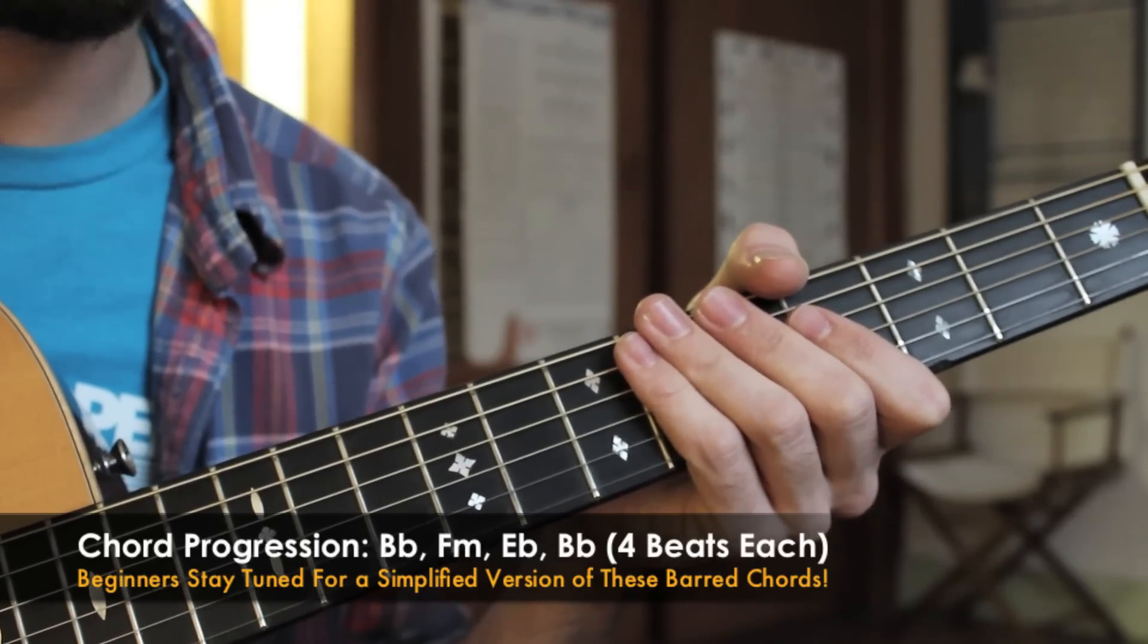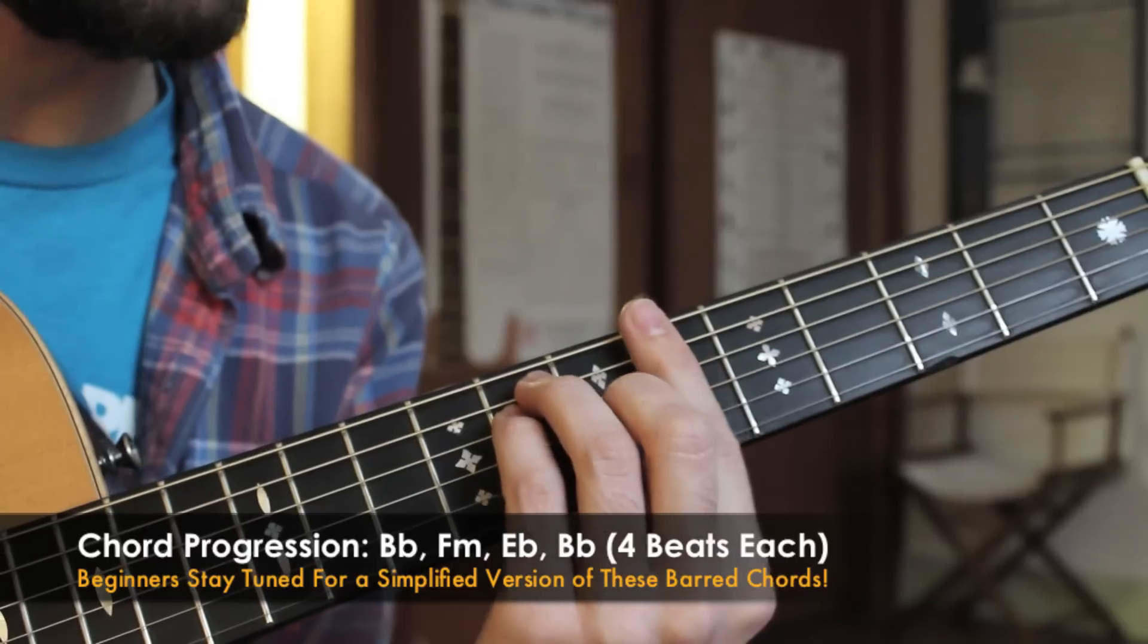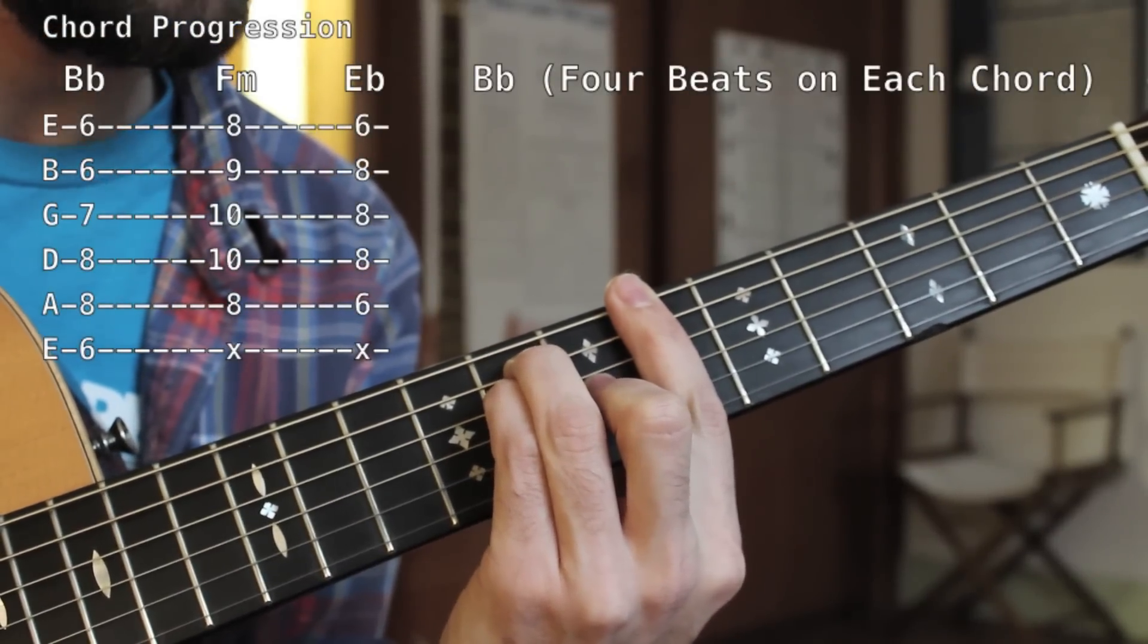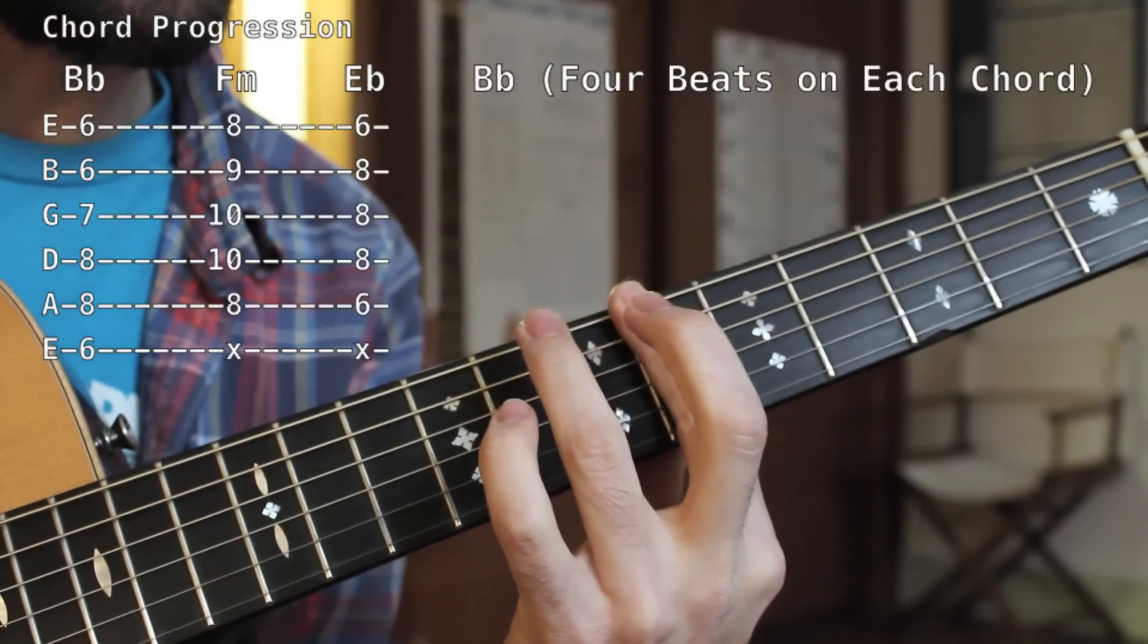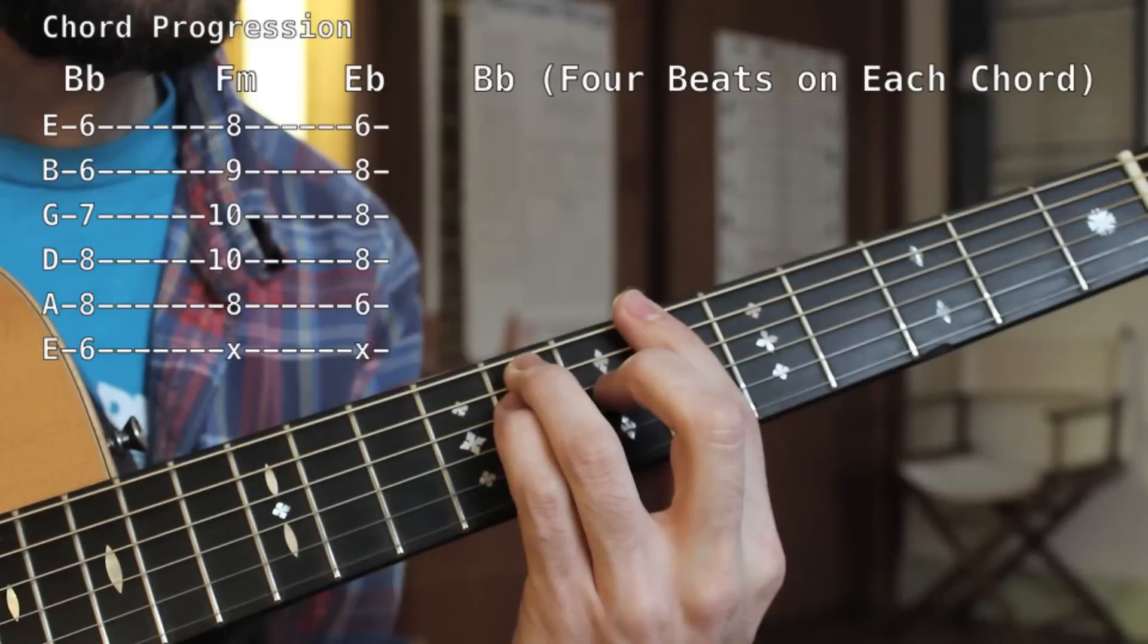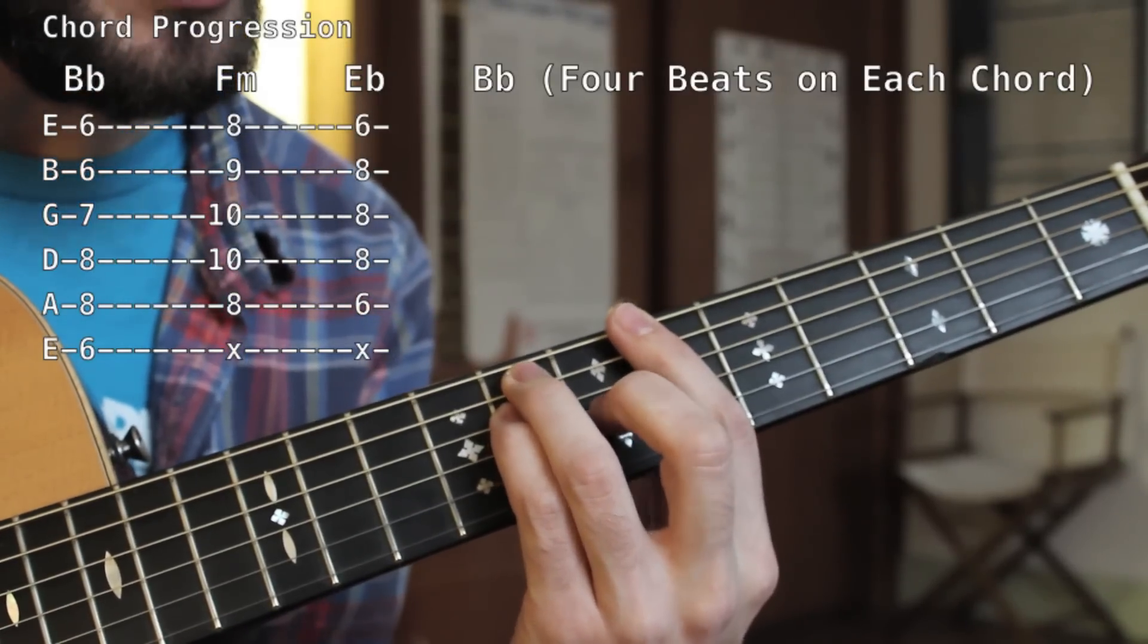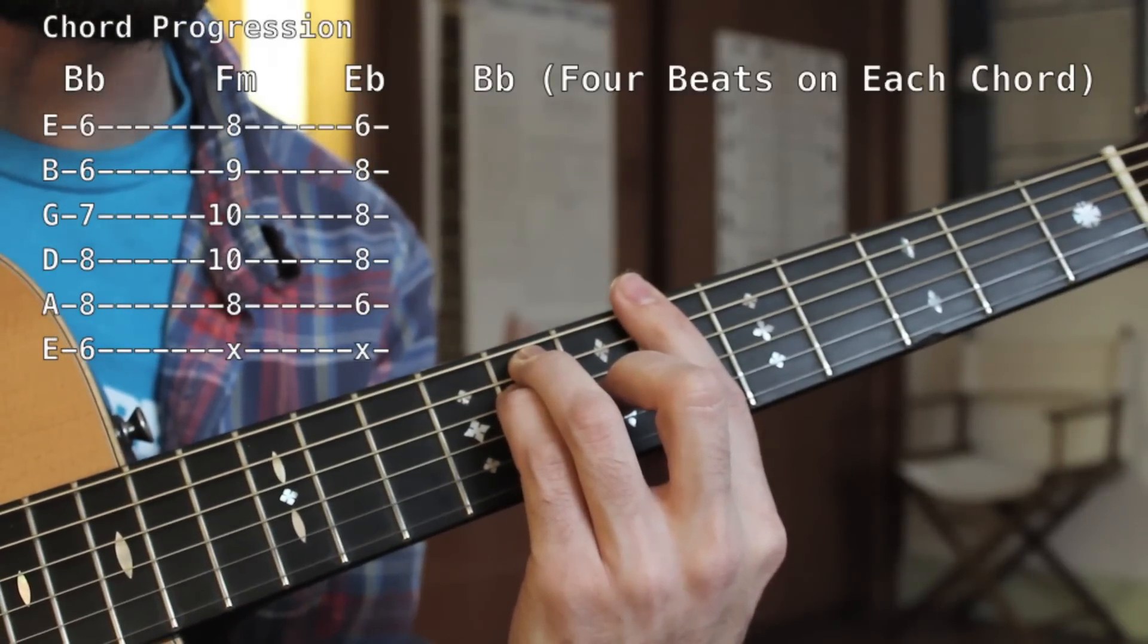All right, now that we've gotten warmed up with our Mixolydian scale, we can get into the chord progression. This is a very simple chord progression based off our Mixolydian scale and it starts here with a Bb major chord. My first finger is barred across the sixth fret. My third finger is here on the eighth fret of the A string, pinky just underneath that on the eighth fret of the D string, and my middle finger is on the G string seventh fret. Everything's being barred, I'm strumming from E string to E string.